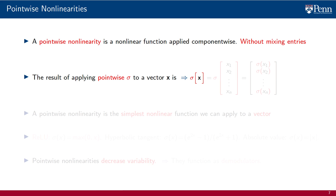More precisely, the result of applying the point-wise nonlinear function sigma to the vector x — which is a vector made up of entries x1 through xn — is equal to the vector that stacks sigma of x1, sigma of x2, all the way through sigma of xn. It applies the nonlinearity to each entry individually. Entries are not mixed with each other in the application of sigma. The result that appears in position k of the vector sigma of x is sigma of xk.